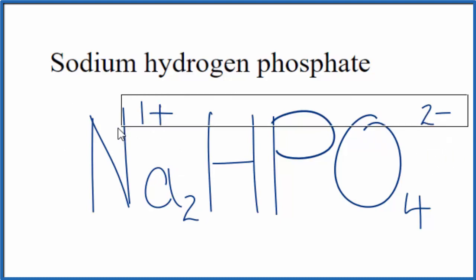So this here is the formula for sodium hydrogen phosphate, Na2HPO4.